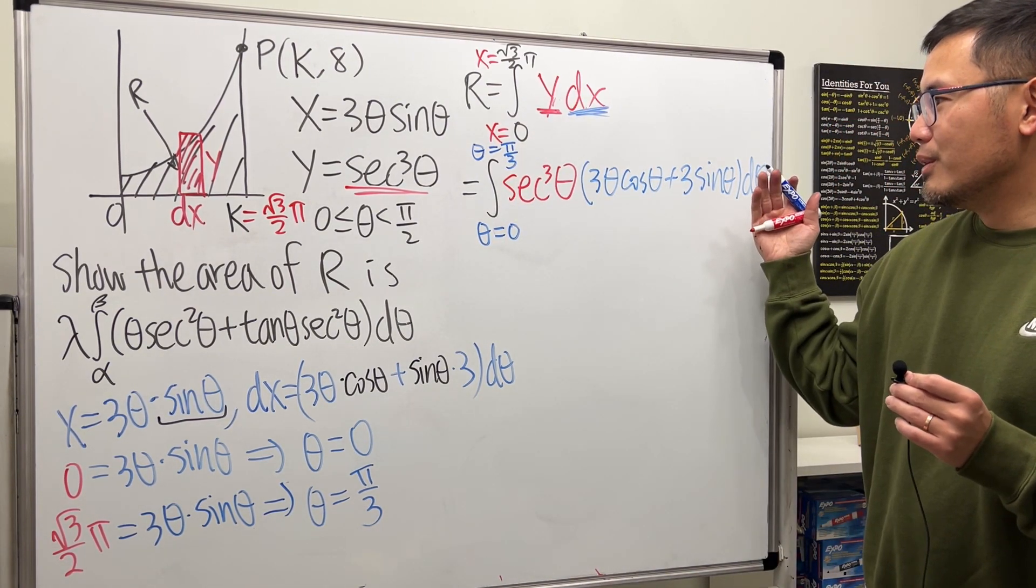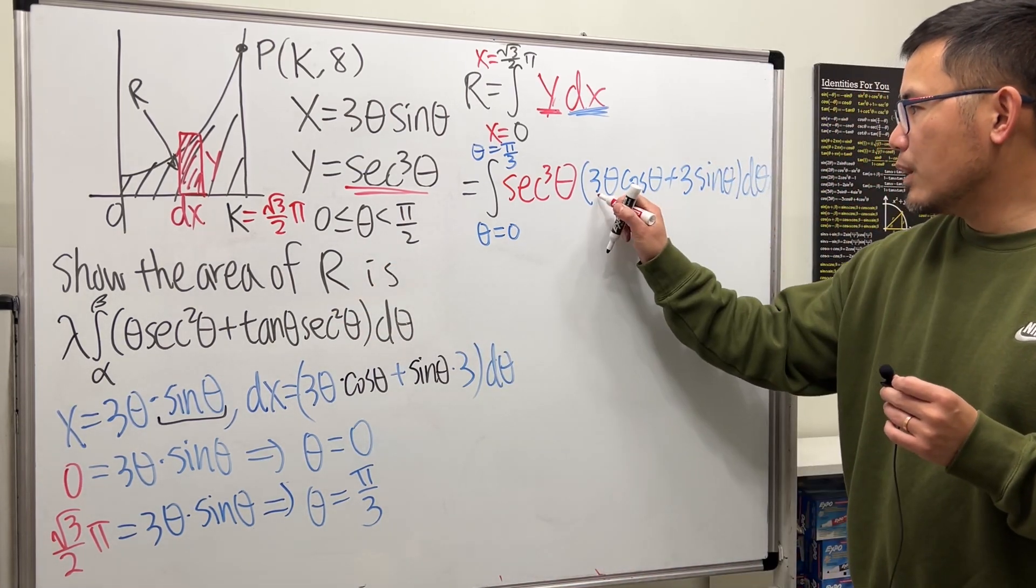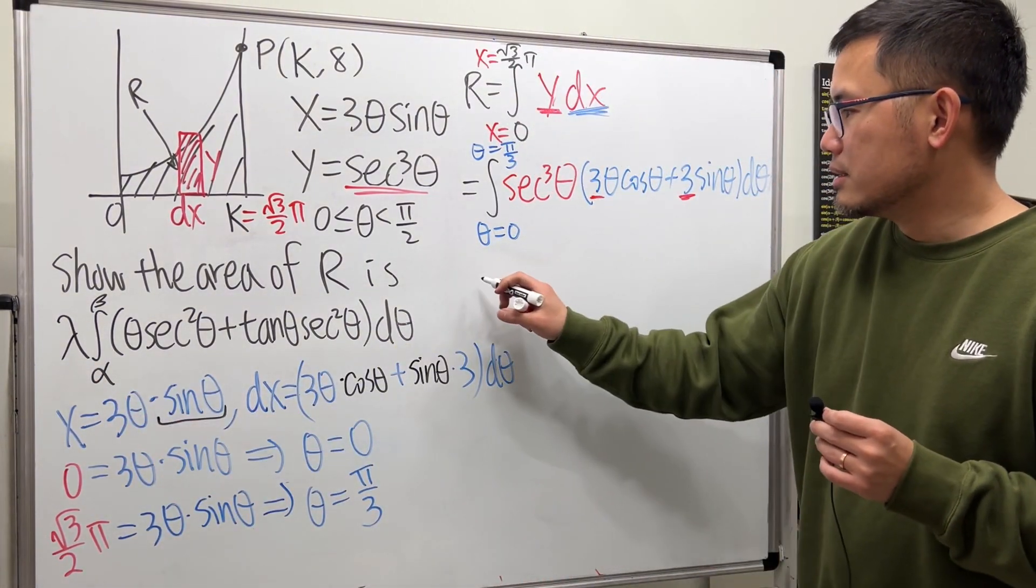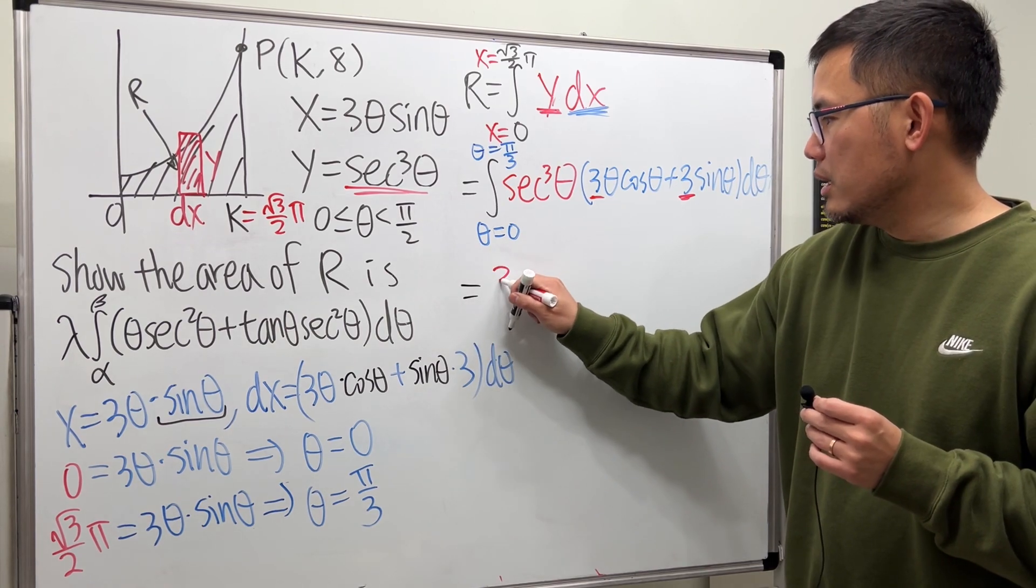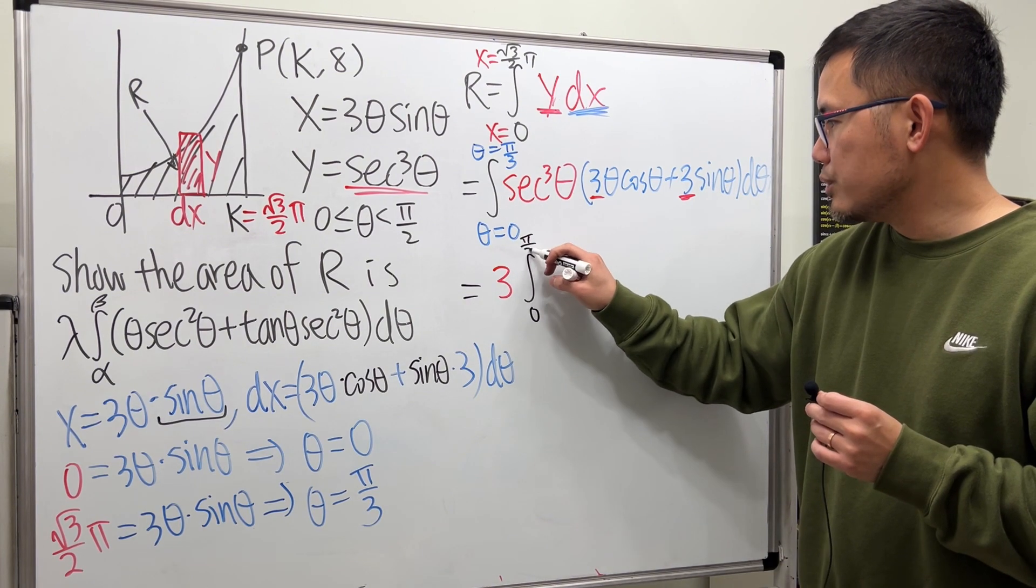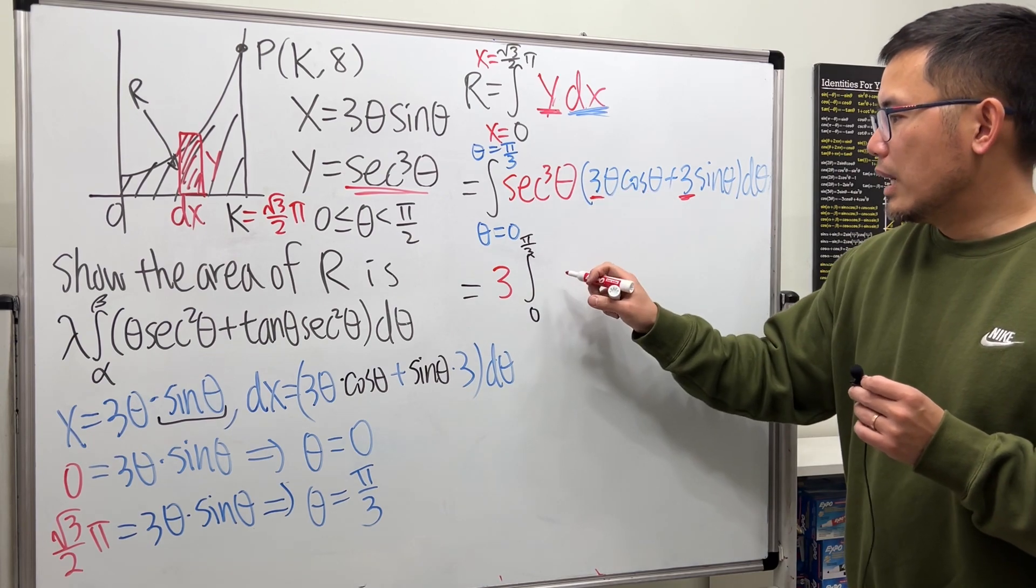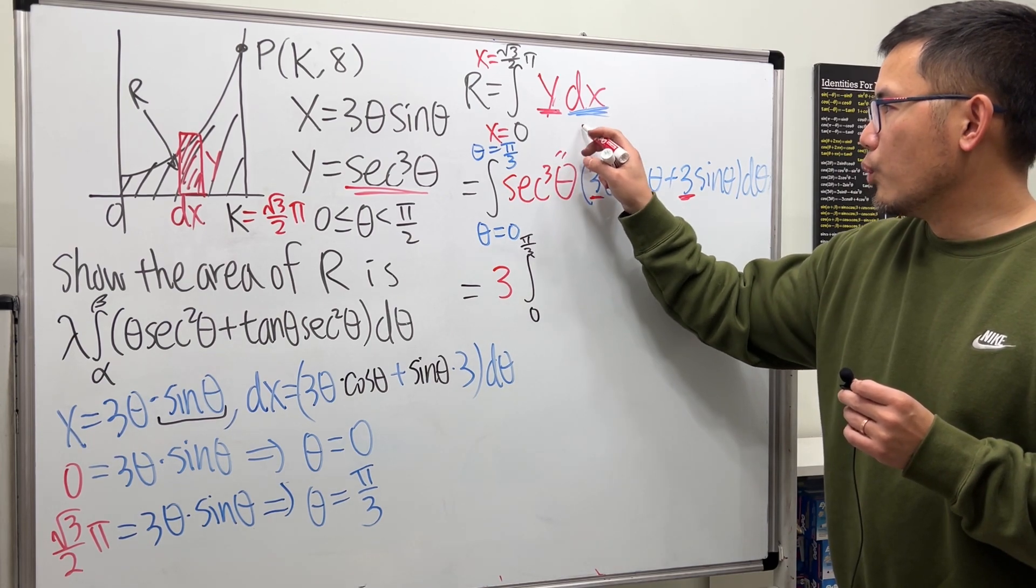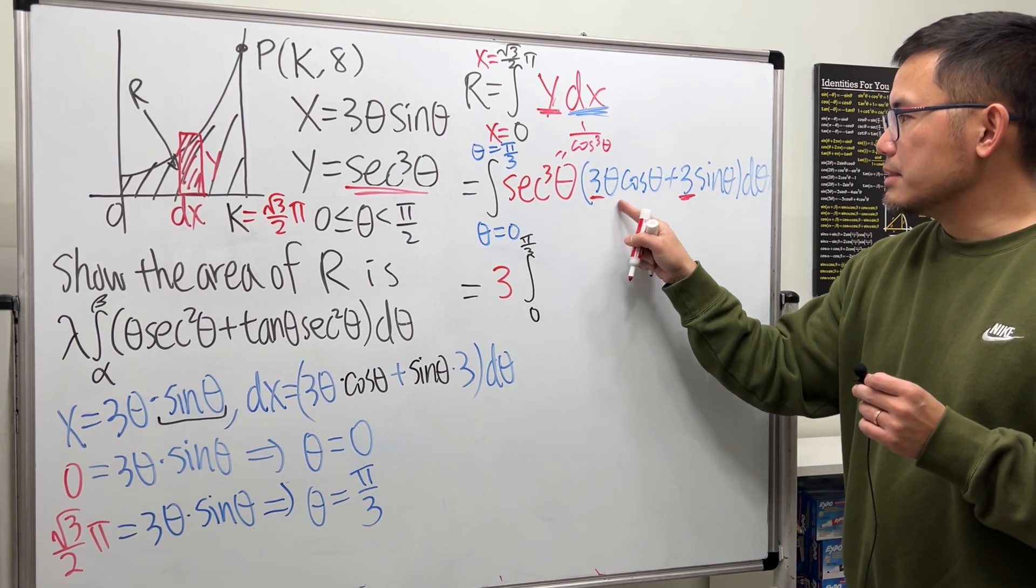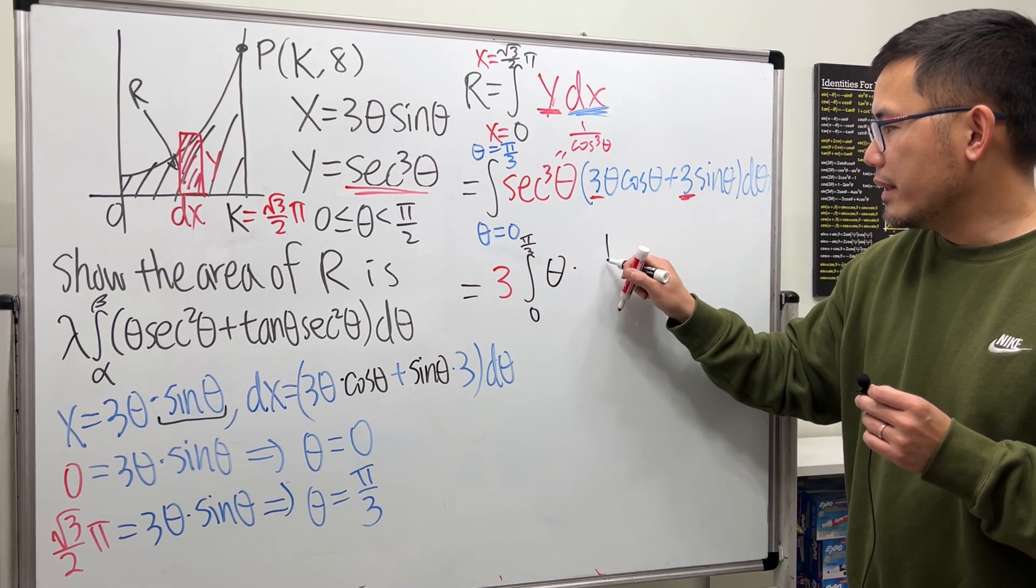Now we just have to work this out, put that in that form, and we'll be done. We see that we have 3 and 3 - we can factor that all the way, and that will be the λ. This will be 3 all the way in the front. Integral from 0 to π/3, and then sec³θ times that. I will look at this as 1/cos³θ.